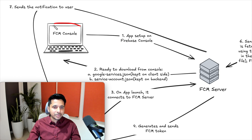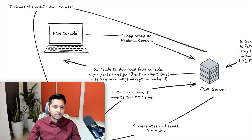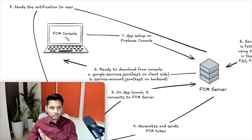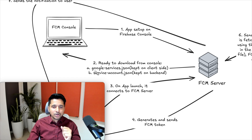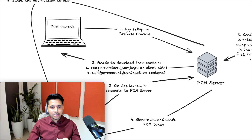Here, what we do is we go on the FCM console website, and that website is connected to the FCM server by Google — Firebase Cloud Messaging. After putting all the information such as the application package name and app name, this server will internally generate two things for us: google-services.json and service-account.json.